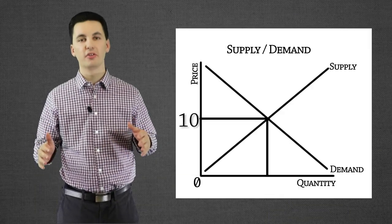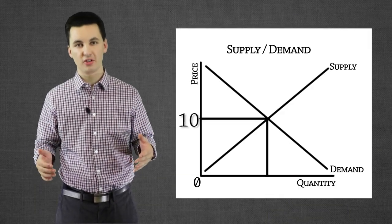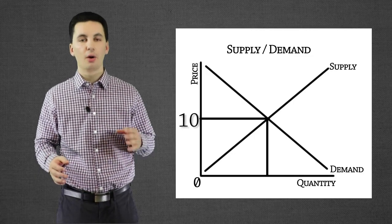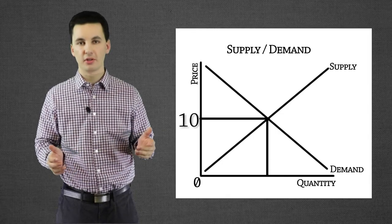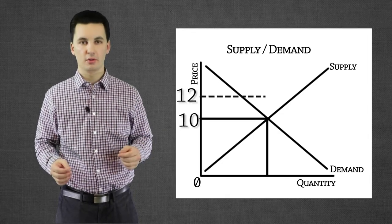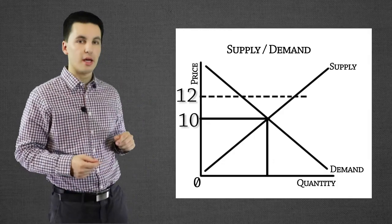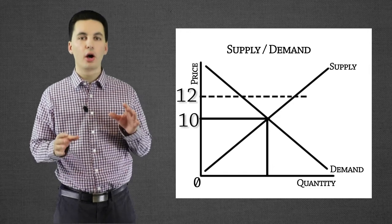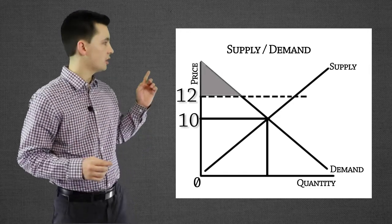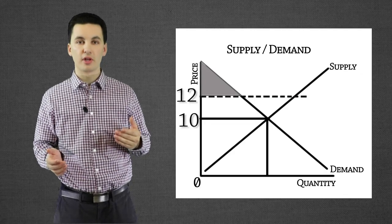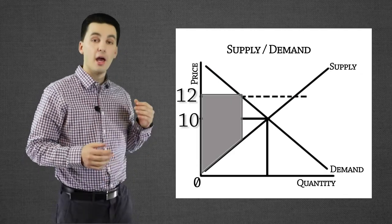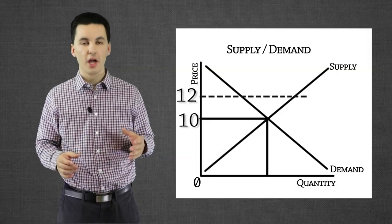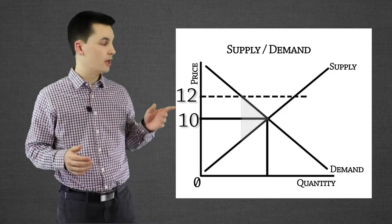Now let's pretend that companies got upset about these price changes and got the government to put a price floor in effect. A price floor, remember, is a minimum amount that companies can charge, so it will be above our equilibrium. On my supply and demand chart, this new price floor is set at $12. Our consumer surplus is represented by the area here, our producer surplus is represented by the area here, and now we're going to have a new deadweight loss — our lost efficiency — represented by this area here, showing what we could have had if the market hadn't been manipulated.